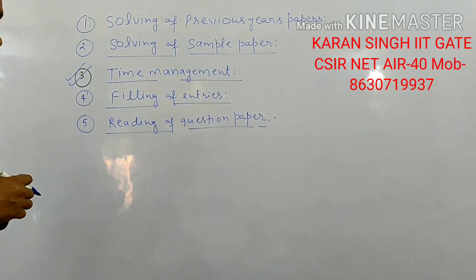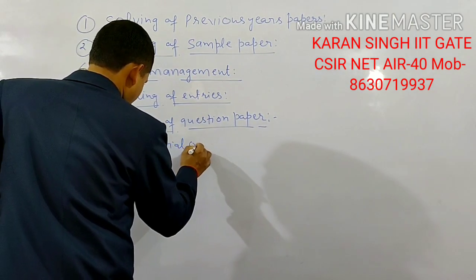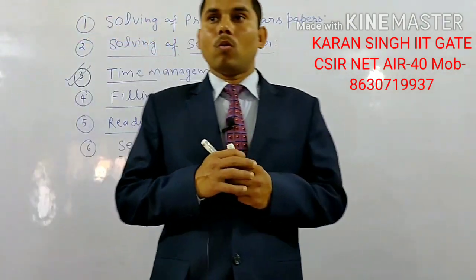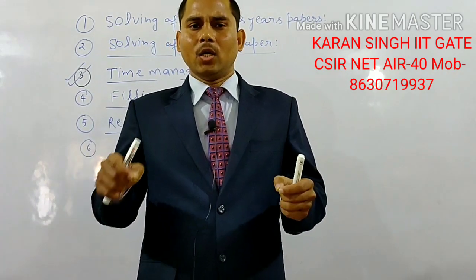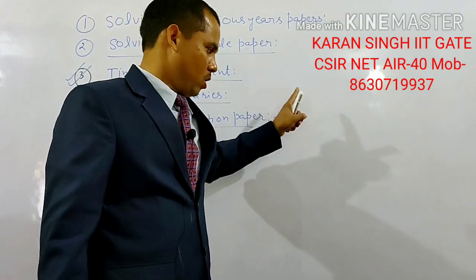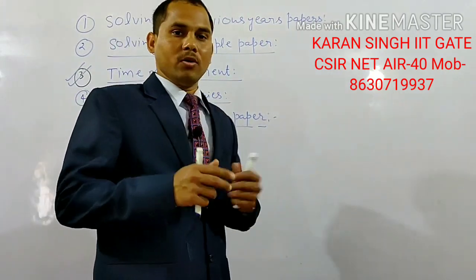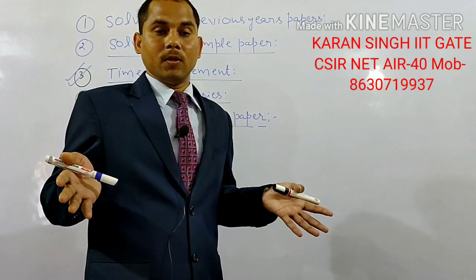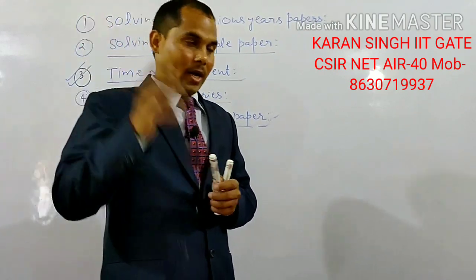Point number six: sequence order. If you have confidence that you can answer all the questions, the best way is to answer them in sequential order — answer number 1, answer number 2, answer number 3, answer number 4, and so on. This is the best way to write your answers in your answer book. If you don't know the answers to all questions, in that case answer the questions which you know very well first.